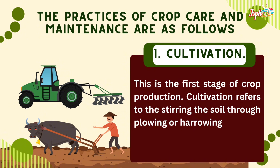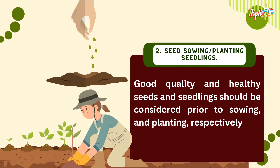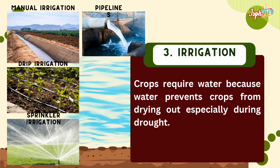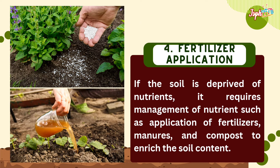The practices of crop care and maintenance are as follows. Cultivation is the first stage of crop production, referring to the stirring of soil through plowing or harrowing. Good quality and healthy seeds and seedlings should be considered prior to sowing and planting. Crops require water to prevent drying out, especially during drought; types of irrigation include manual, drip, sprinkler, and pipeline. If soil is free of nutrients, application of fertilizers, manures, and compost is required to enrich soil content.